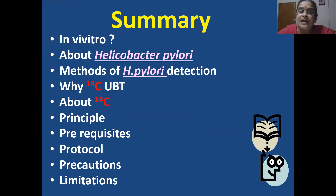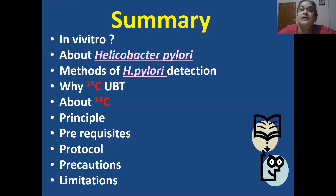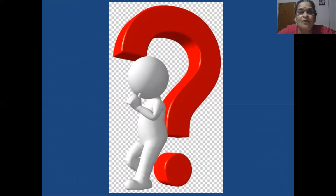To summarize: we covered what is in vivo, about Helicobacter pylori as a gram-negative spiral-shaped bacterium, methods of H. pylori detection like gastroscopy, stool antigen, and serological tests, and the 14 carbon urea breath test — its advantages, the radionuclide 14 carbon, the principle, prerequisites, protocol, precautions, and limitations. Thank you, and I look forward to any feedback or questions you may have.